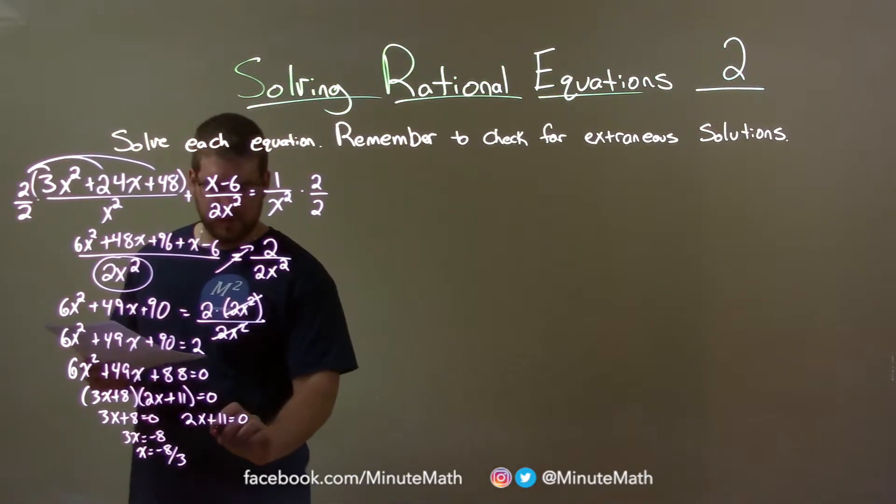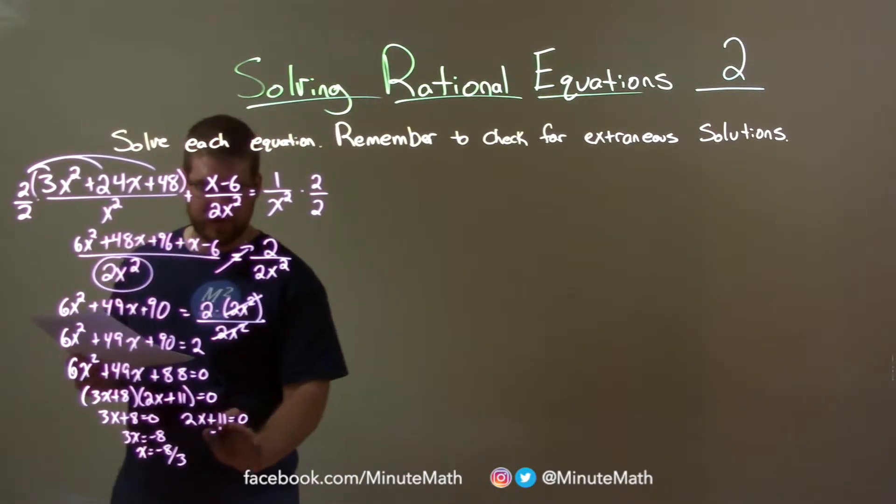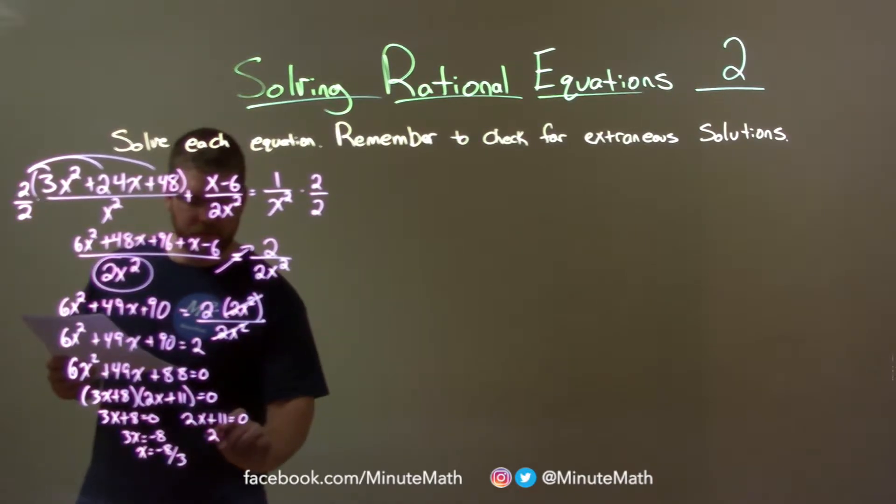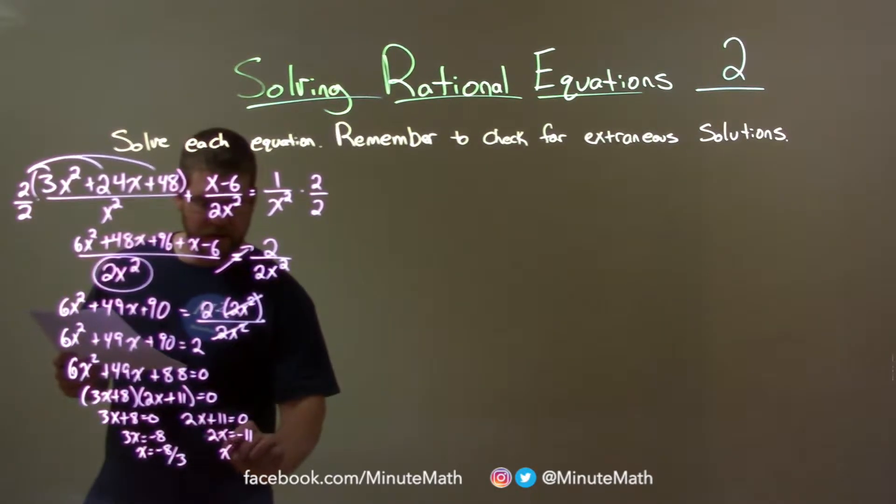Same thing here. Subtract 11 from both sides. So 2x equals negative 11. Divide both sides by 2, and x is negative 11 halves.